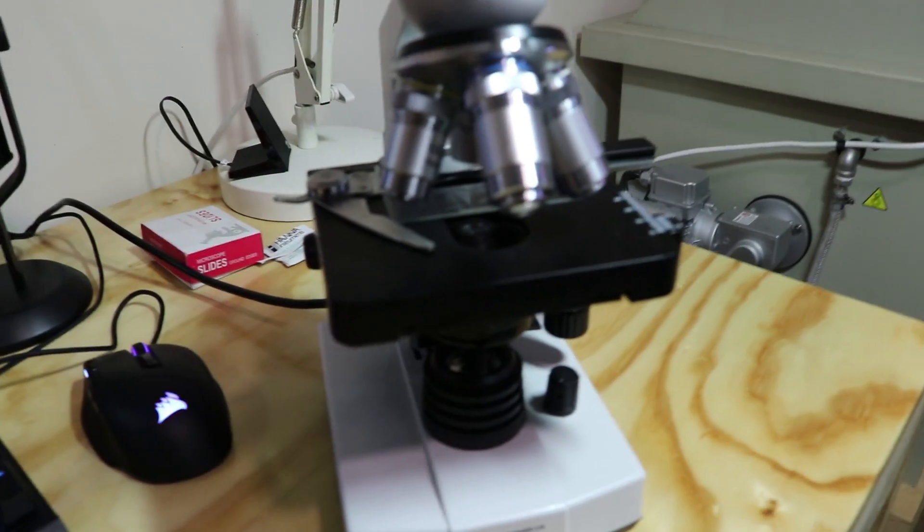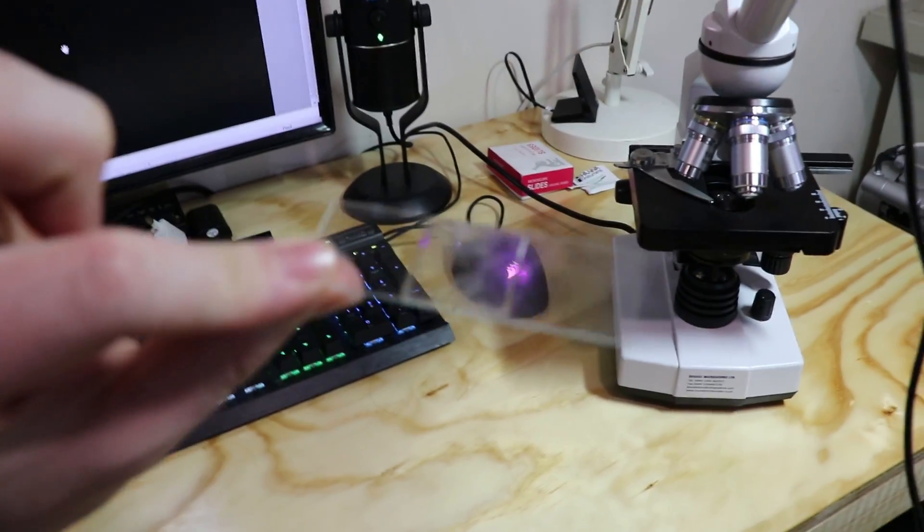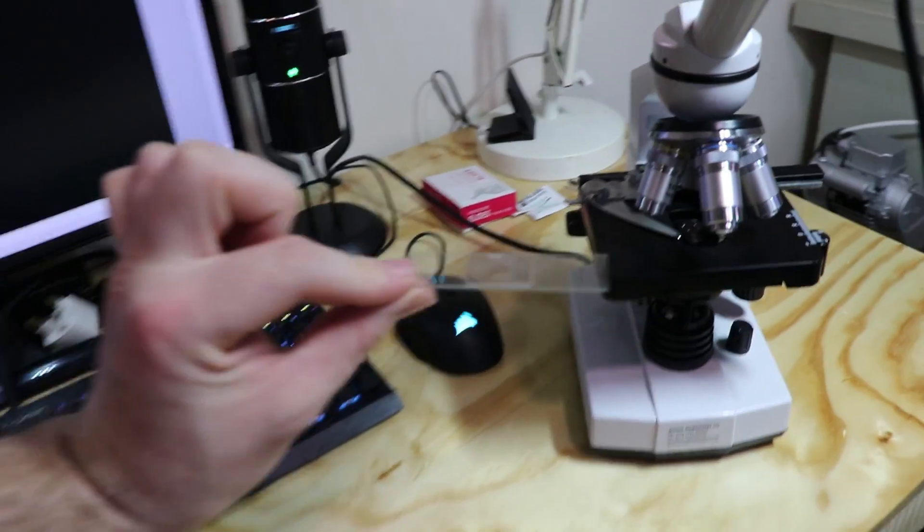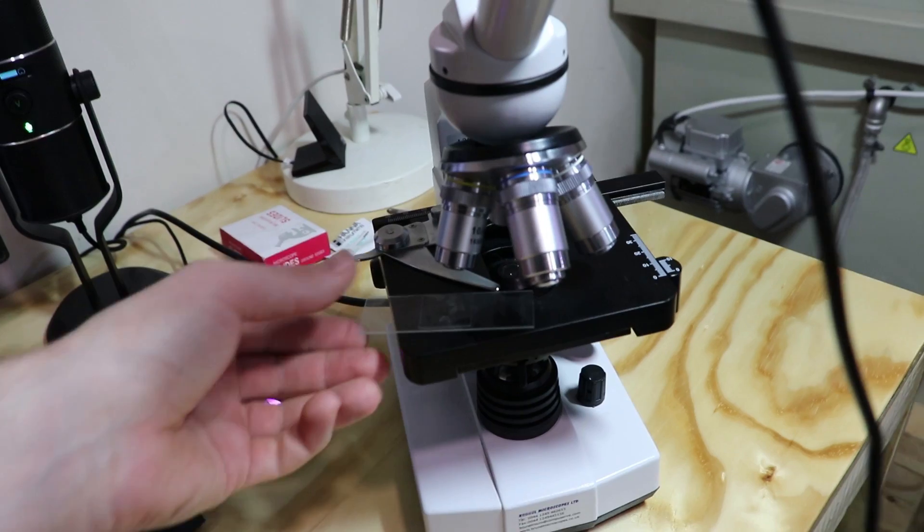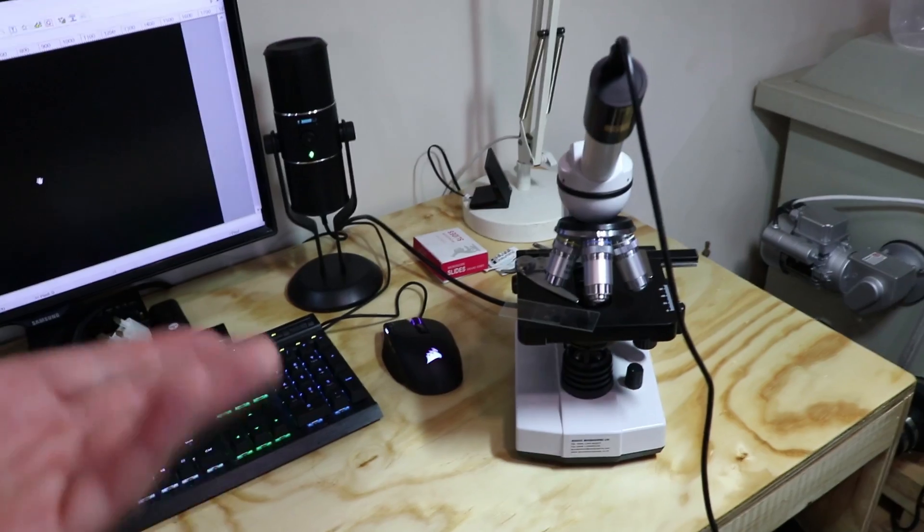So there we go. That's the microscope slide bit done. What am I going to do with this slide now? I'm actually going to wash it, clean it, and dry it off, and then put it back so I can use it next time. There's no point in just throwing them away or even keeping them mucky. Might as well just reuse them and it'll be fine to use again.